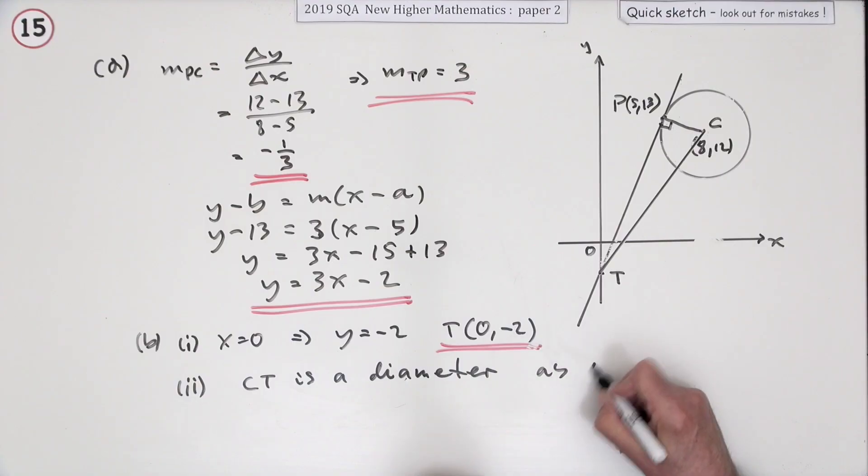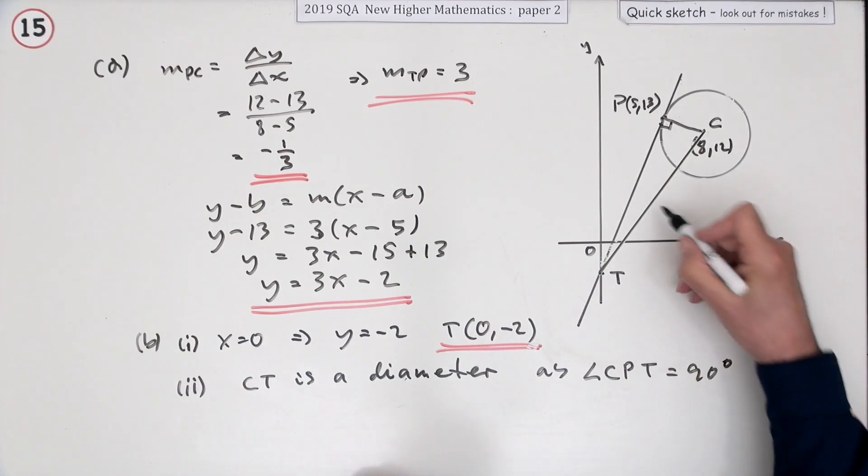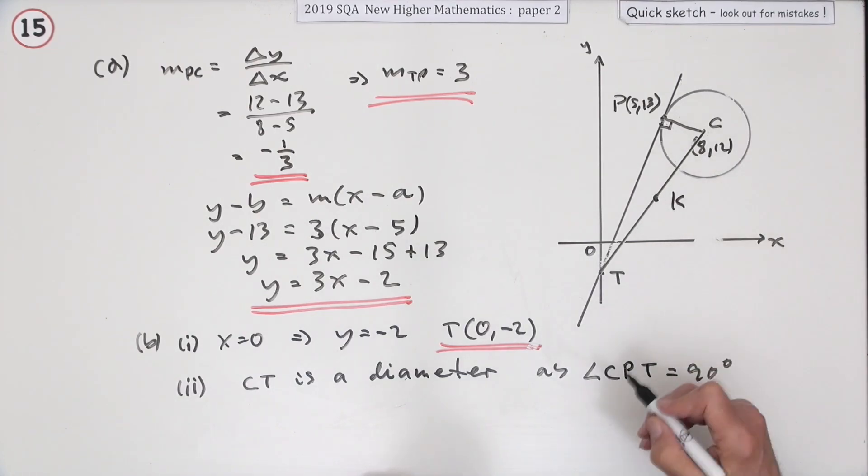Maybe get the reason as angle c, p, t is 90 degrees. And if that's the case, the centre of the circle, what do you got c there, maybe we'll use k, must be halfway between c and t.